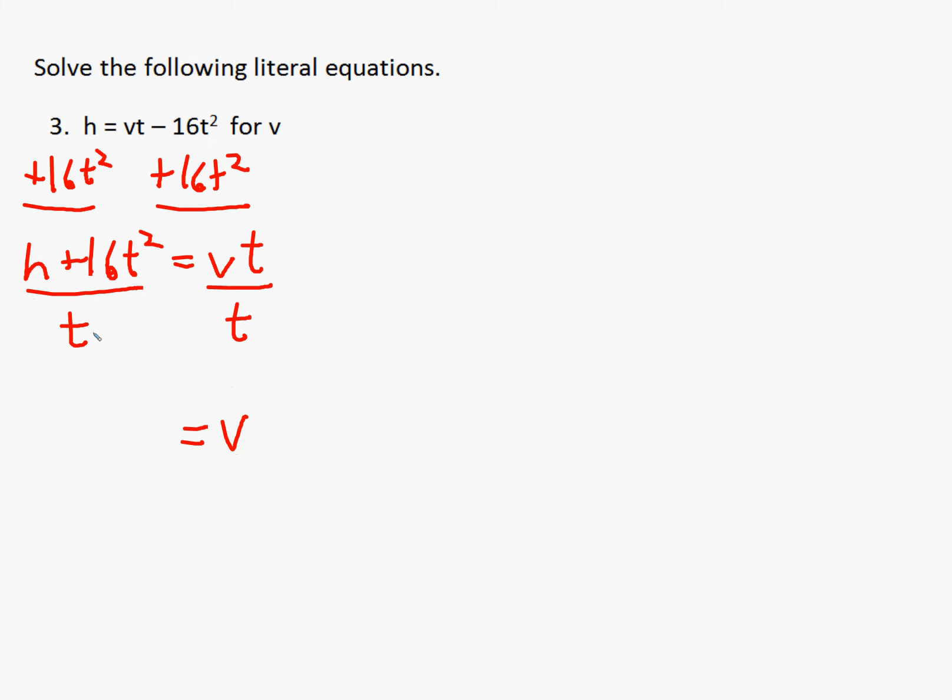And we get v equals, and now we have a t here. We don't have a t in both of them, so we can't reduce these t's because there's an addition here. That's a misuse of simplifying or reducing, so we cannot reduce when there's an addition here in the numerator. So we have h plus 16t squared over t. And we could have written v equals, but just wrote that is equal to v.